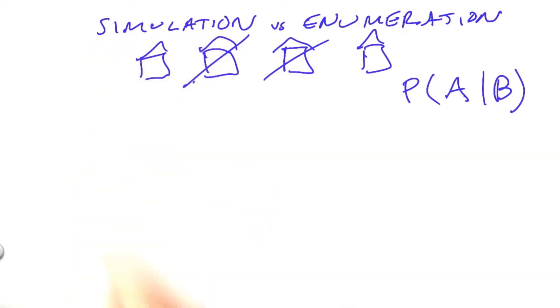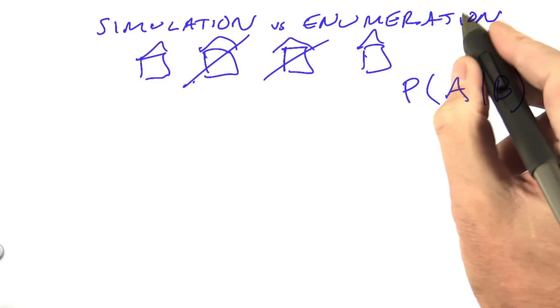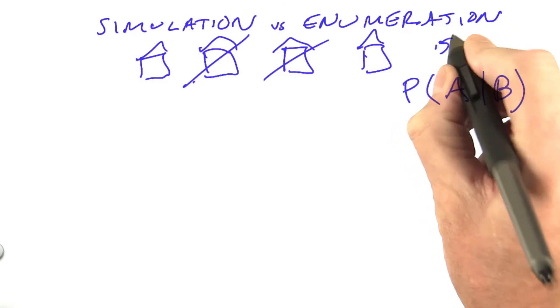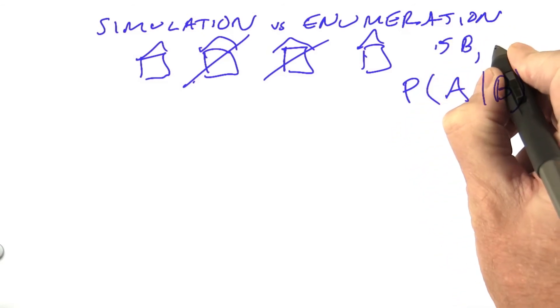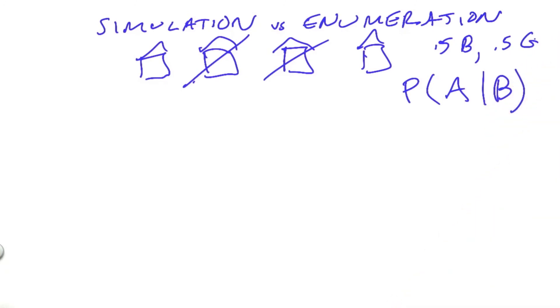In real life, we can do simulation by going out and polling and asking people. In mathematics, we can do enumeration if we make certain assumptions. One assumption we can make is that it's exactly 50% probable that you get a boy and 50% probable that you get a girl and that one birth is independent from another.